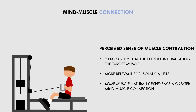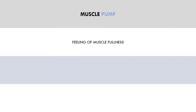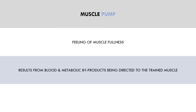The next indicator we have is the muscle pump. This is the feeling that lots of blood has been directed to the trained muscle and it has a feeling of fullness. In reality, the pump is an accumulation of blood and metabolic byproducts in the muscle directed there as a result of metabolic stress. If a trainee is targeting a specific muscle group and between sets it has a feeling of fullness, then this is probably a good indicator that you are in fact training that muscle well and it is receiving an effective hypertrophic stimulus.